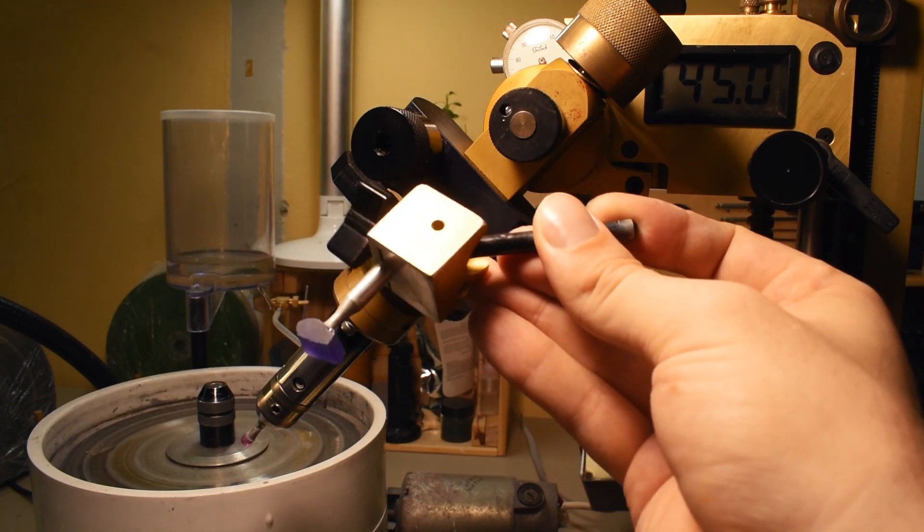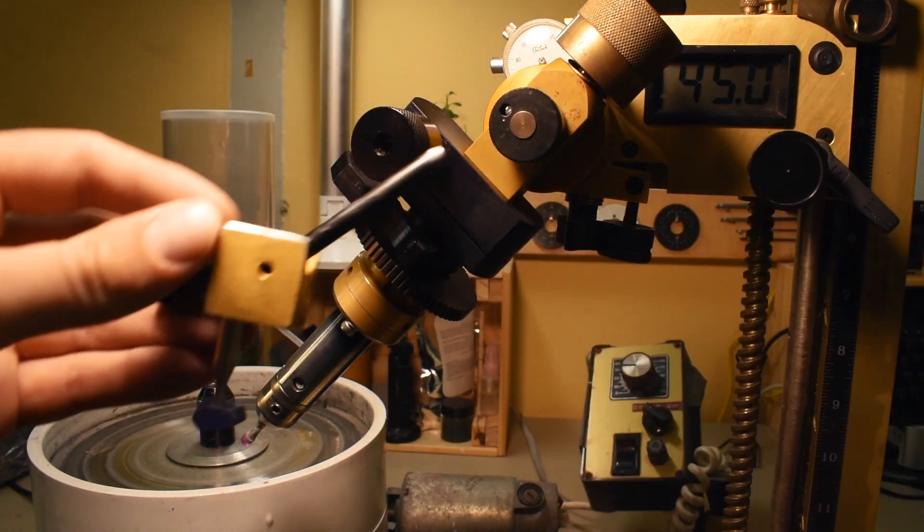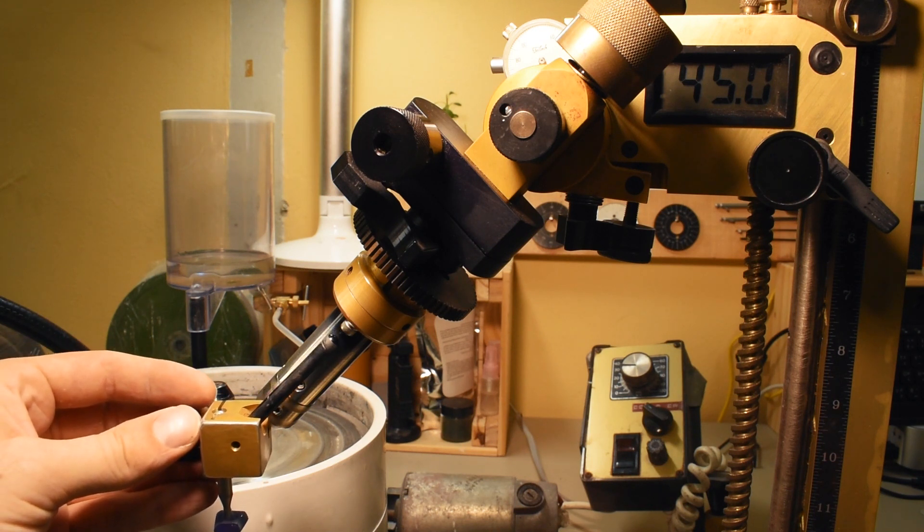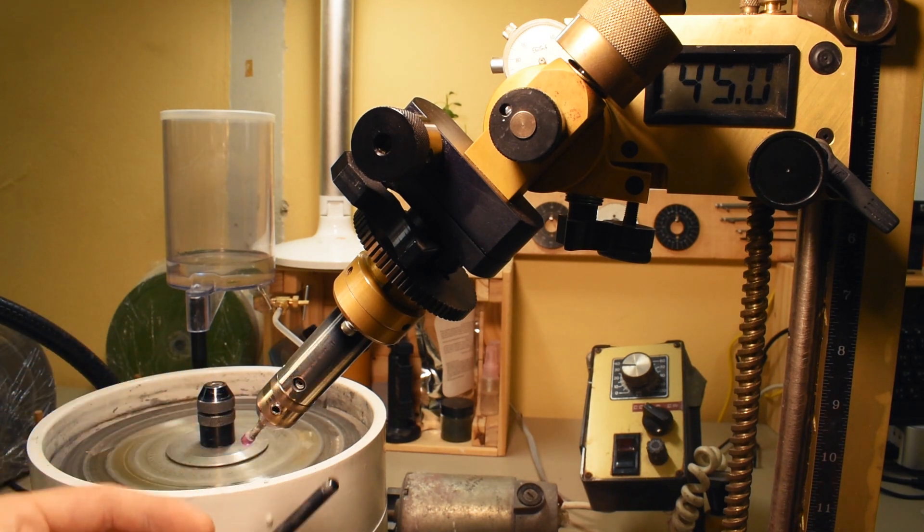For the faint of heart, there is an included 45 degree table adapter. Simply put your stone in the adapter, put the adapter in the quill, set your angle to 45 degrees, and you're ready to cut a table.